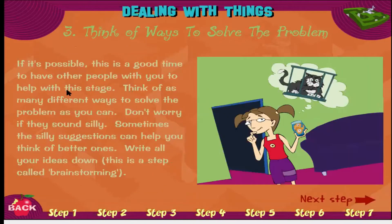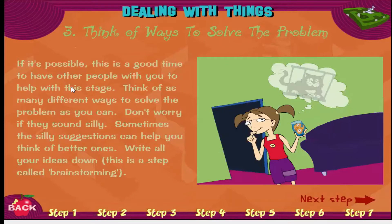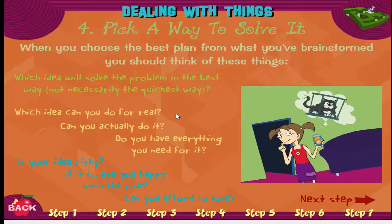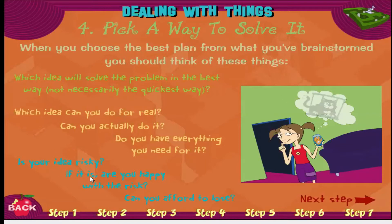Step three: think of ways to solve the problem. This is a good time to have other people with you. Think of as many different ways as you can — don't worry if an idea sounds silly, because sometimes silly suggestions help you think of better ones. Write all your ideas down. This step is called brainstorming. Step four: pick a way to solve it. Ask which idea will solve the problem best and quickest, and which idea you can actually do. You can't say something like 'I'll be Superman' — can you actually do it? Is your idea risky, and can you afford to lose?